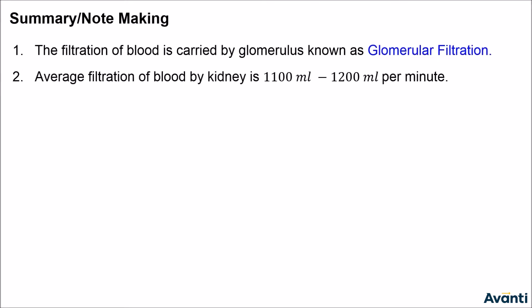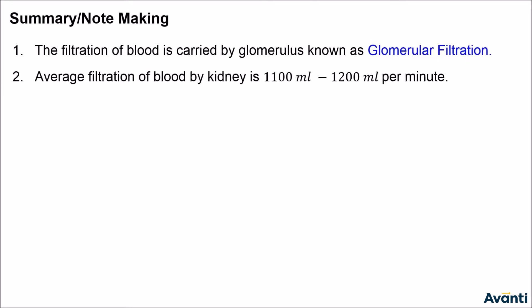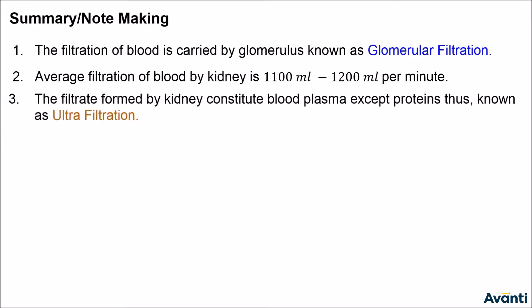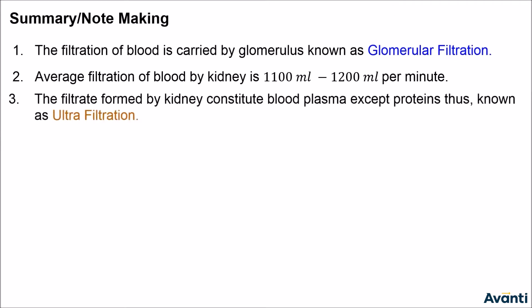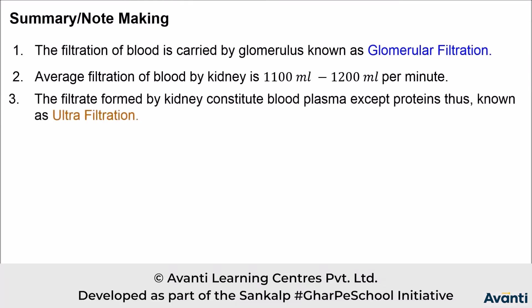Our next point is the average filtration of blood by kidney is 1100 ml to 1200 ml per minute. The average filtration of blood by kidney is 1100 to 1200 ml per minute.